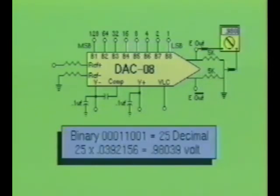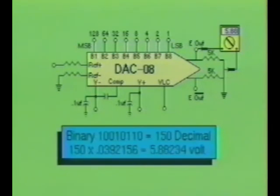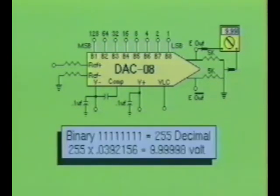When a binary input of 00011001 is applied at the inputs of this device, we see that the analog output becomes approximately 980 millivolts. When the binary input is changed to 10010110, the analog output changes to approximately 5.88 volts. And by making all the inputs high, we can produce an output voltage of approximately 9.99 volts.